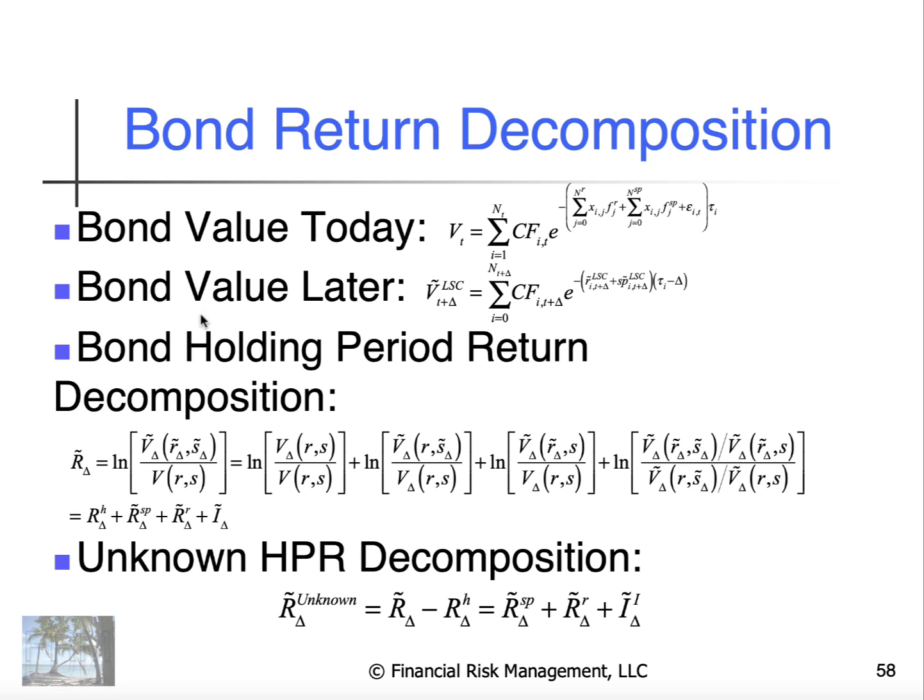And we can decompose the holding period return with continuous compounding into four component pieces: the horizon component, the spread component, the spot rate curve component, and the interaction term. The horizon component is known today.